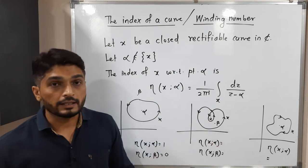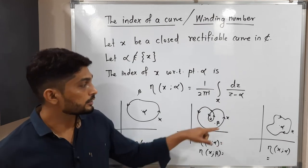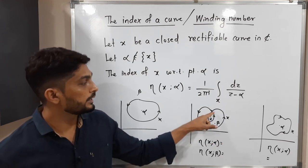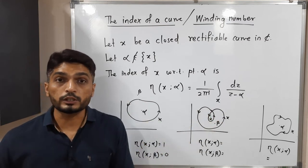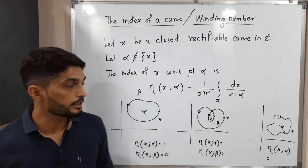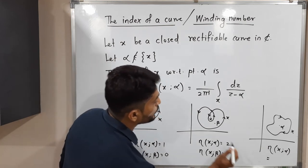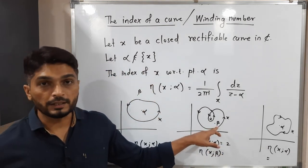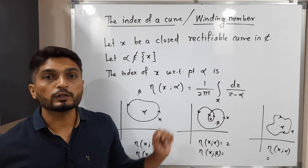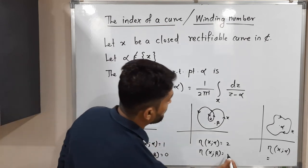Let us discuss the second example. Here you can easily see that curve x takes two rotations. This is the first rotation and this one is the second rotation. X takes two rotations around alpha so the winding number will be two. But if you talk about beta, that curve x takes only one rotation around beta, so the winding number will be one.